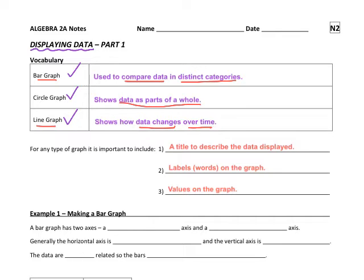So for any type of graph, it is important to include a title. Across the top of your graph, I would like you to include a title that describes the data that's displayed. And then it's also important to put labels either on the x and y axis, across the horizontal spot or up the side there on the vertical spot. You'll want to describe what each axis is showing. And if you're making a circle graph, you want to include some labels in each section so that we know what each section represents.